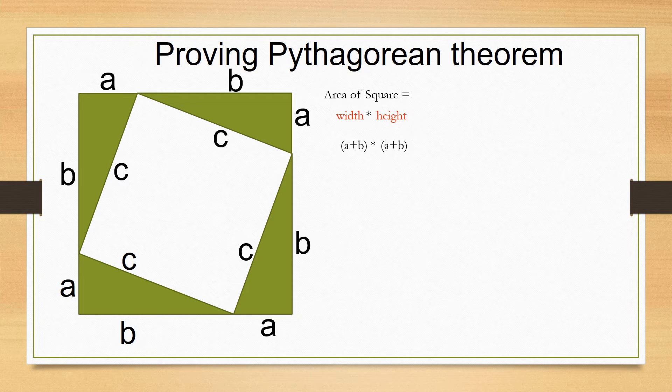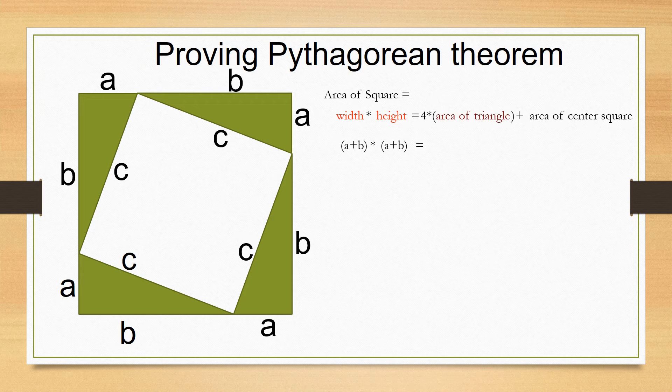But you know, there is another way to calculate the area of this square. We can take the area of the four triangles and add that to the area of the center square. The area of the center square is c squared.